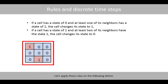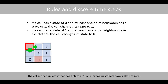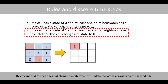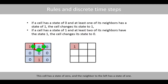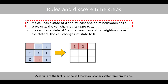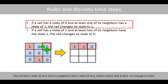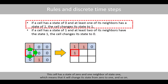Let's apply these rules on the following layers. The cell in the top left corner has a state of one, and its two neighbors have a state of zero. This means that the cell does not change its state when we update the layers according to the second rule. This cell has a state of zero, and a neighbor to its left has a state of one. According to the first rule, the cell therefore changes its state from zero to one. This cell has a state of zero and no neighbors with a state of one, which means that it does not change its state. This cell has a state of zero and one neighbor of state one, which means that it will change its state from zero to one, and so forth.